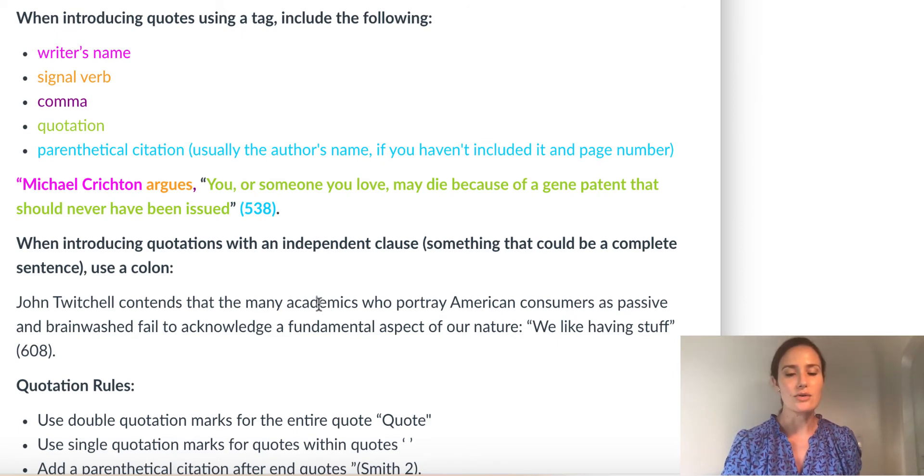Let's look at this example. Michael Crichton argues, comma, quote, you or someone you love may die because of a gene patent that should never have been issued, end quote, parenthetical citation with the page number followed by the period. So I have the author's name Michael Crichton, I have a signal verb argues, followed by a comma, the quotation. Most quotes will begin with a capital letter because it's the beginning of the sentence, followed by the page number in parentheses and the period outside the parentheses.